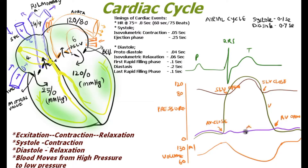The P wave indicates atrial excitation, which is followed by a buildup of pressure in the atria — shown as the 'a' curve for atrial pressure. The atrial pressure is slightly higher than the ventricular pressure at this time because the ventricle is in relaxation phase, near zero. This phase is called atrial systole, lasting around 0.1 second, after which the atria undergoes diastole for about 0.7 second.